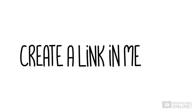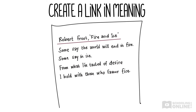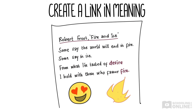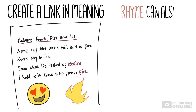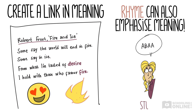Rhymes can also create a link in meaning between the two rhyming words. Take this extract from Robert Frost's Fire and Ice. The way the poet rhymes 'desire' and 'fire' connects the two words. In this way, the rhyme helps us realise that desire is a burning passion that will make the world end in fire. Sometimes poets aren't just rhyming to make a poem sound pretty. Rhyme can also be about emphasising meaning, like in Frost's poem. When you're writing your essays, try to keep an eye out for how poets use rhyme to help convey their message.